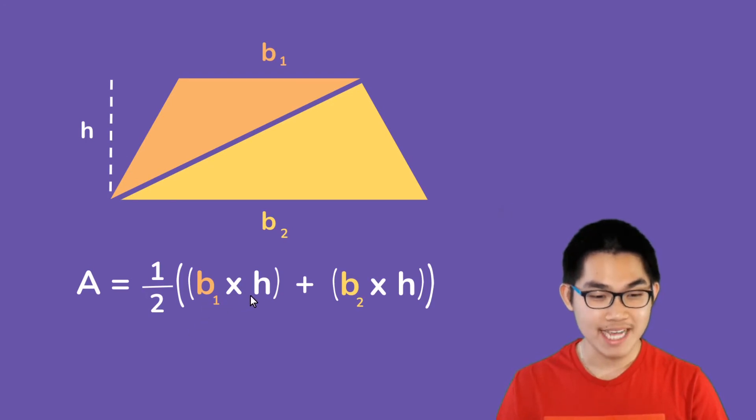Instead of writing base 1 times the height and base 2 times the height, I'm just going to write it like this, which means the same thing. And the last step is to factor out the H inside these expressions. And this is where the area for the trapezoid formula comes from.